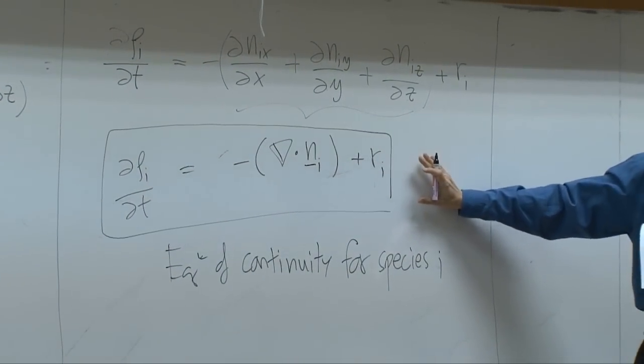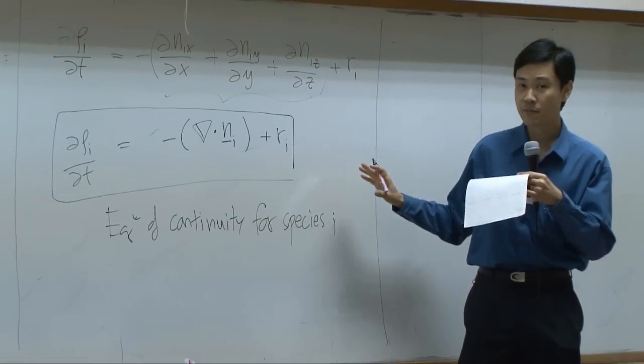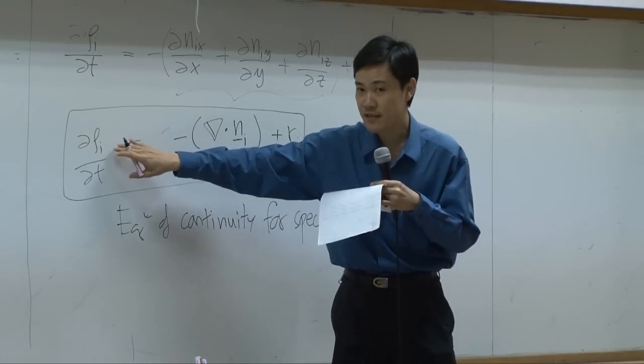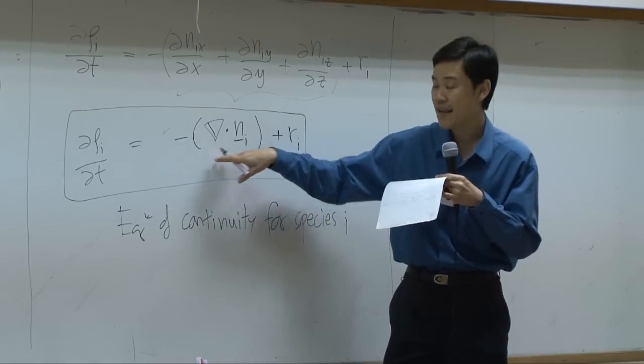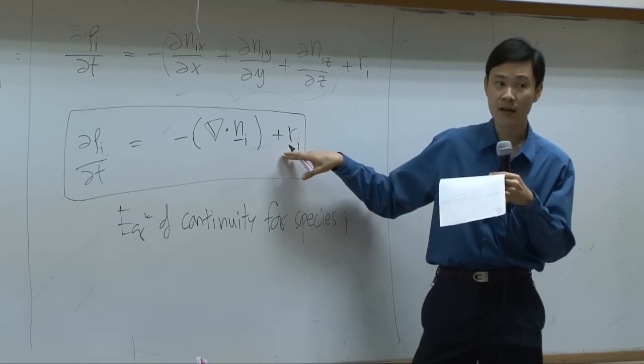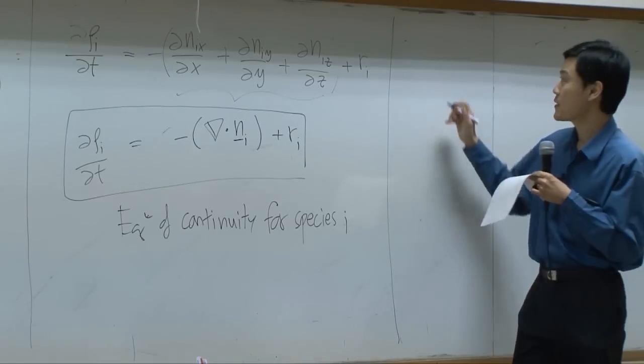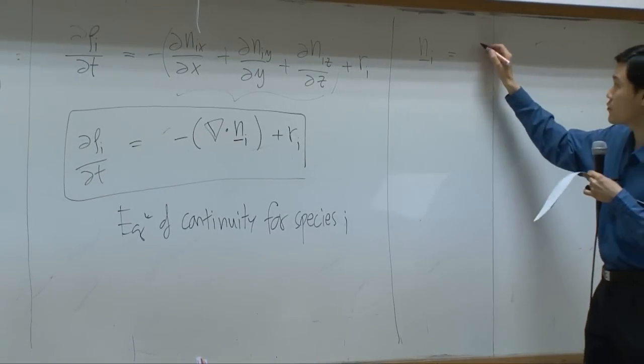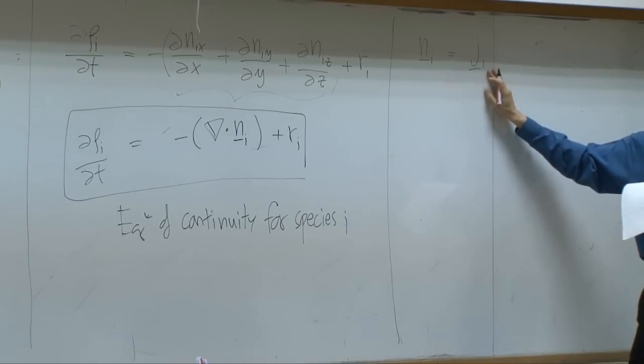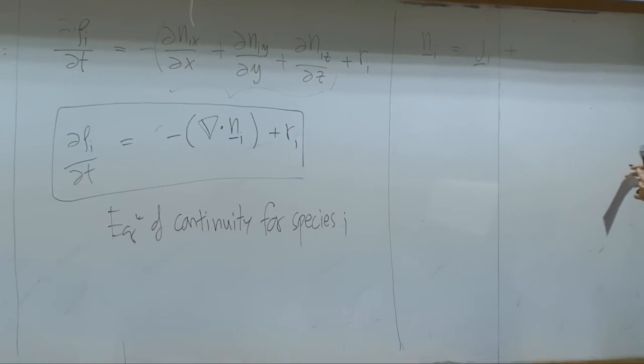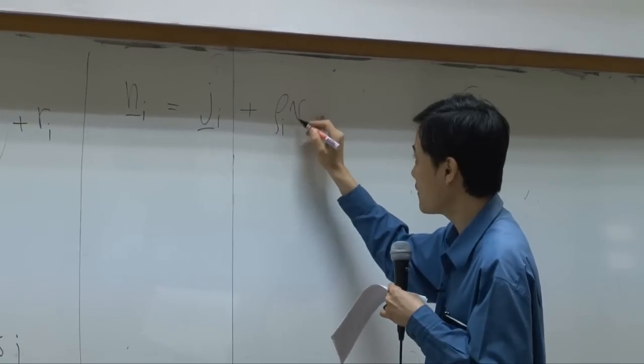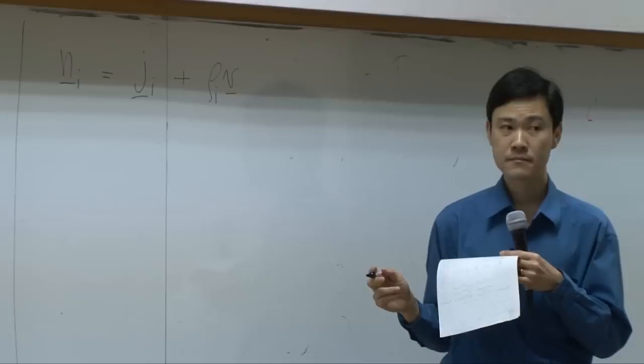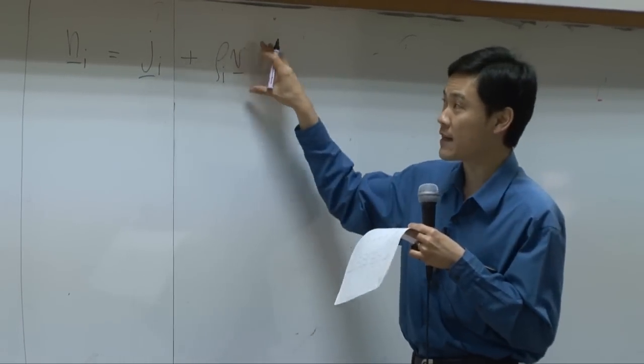This equation of continuity is a mass balance, but it is a mass balance of one single species. By the meaning, this is accumulation of the species i should equal to net flux of species i plus rate of generation. The net flux itself, n_i, is consisting of two terms: diffusion term and convective term. Convective term is rho_i times v.